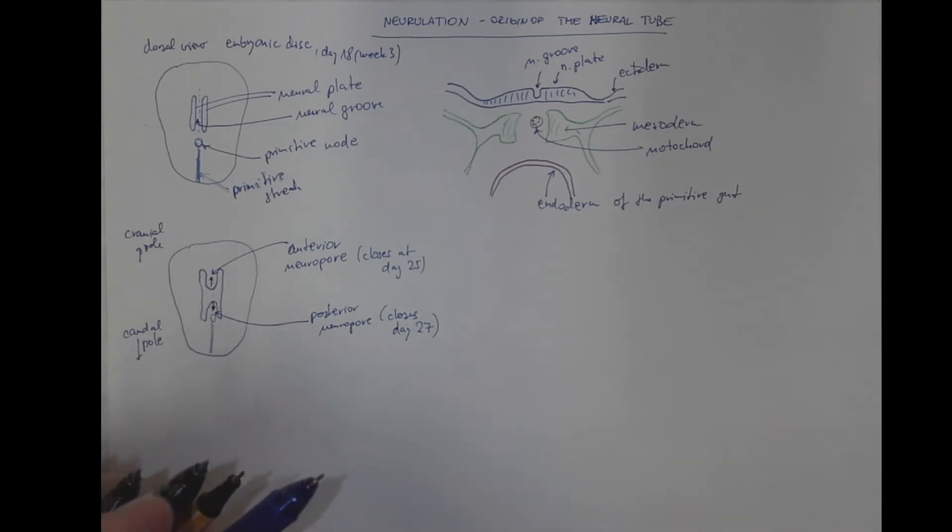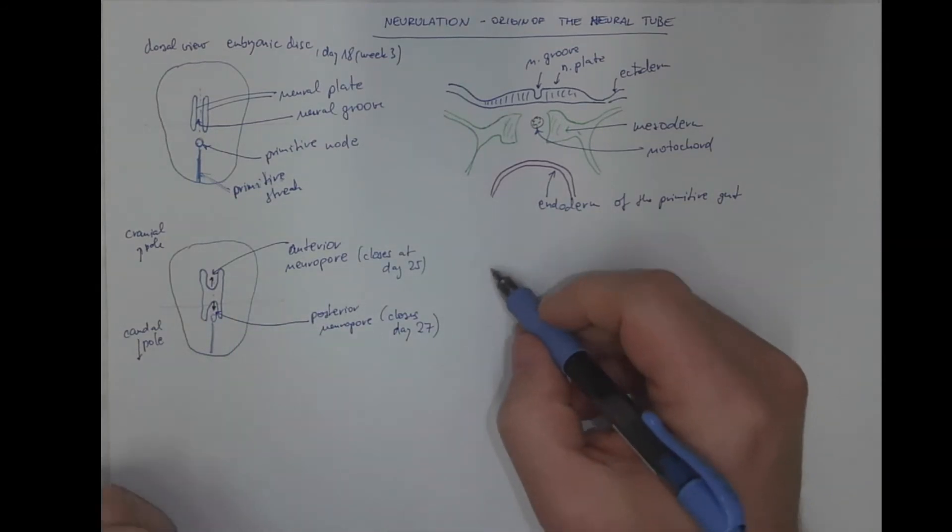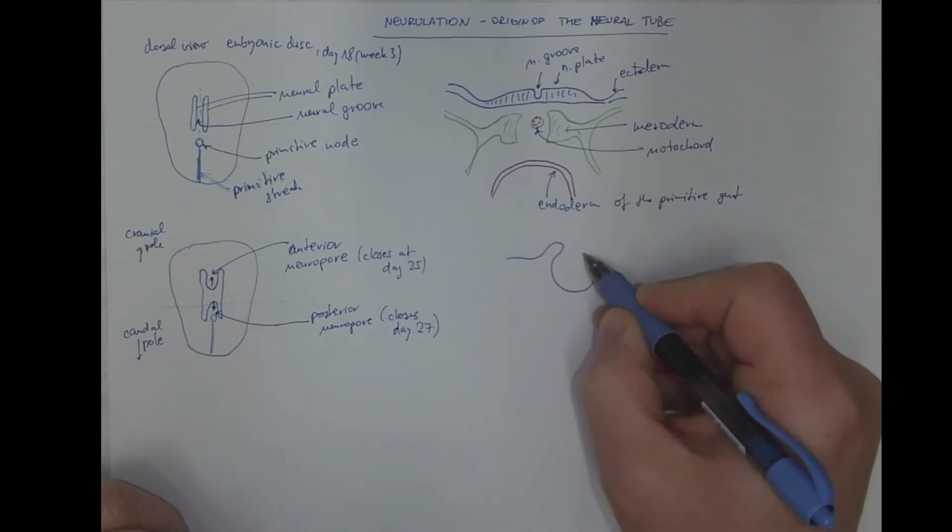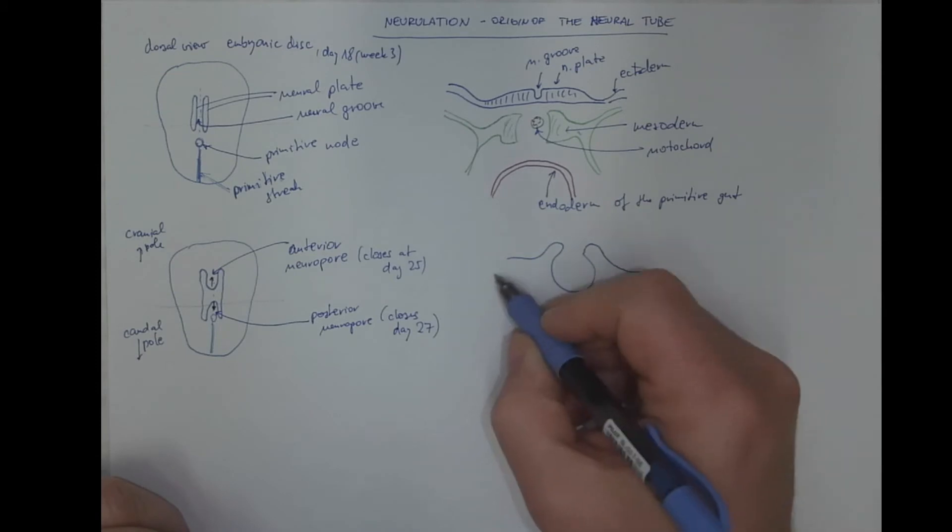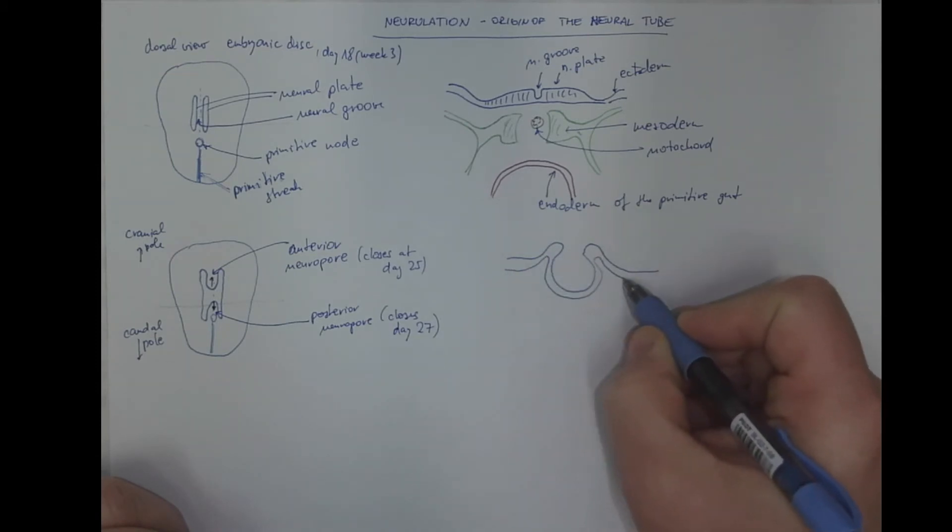Again, in a cross-section, that would be through this nearly closing region. It would look like this, with neural folds, this invagination of the neural tube, the future neural tube.